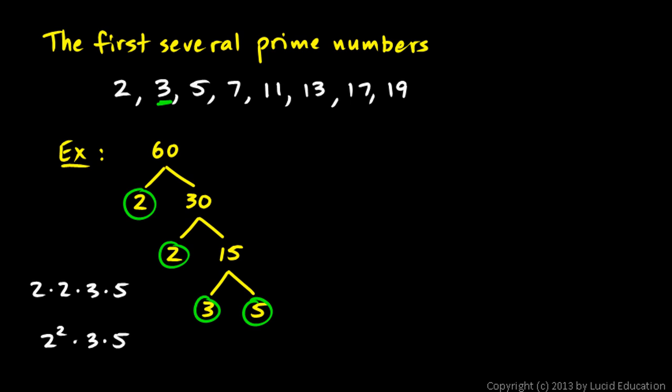I'll do another example. Find the prime factorization of 90. Okay, again, we're going to start with 2 and work our way systematically down this list. Is 90 divisible by 2? It is. It's 2 times 45.